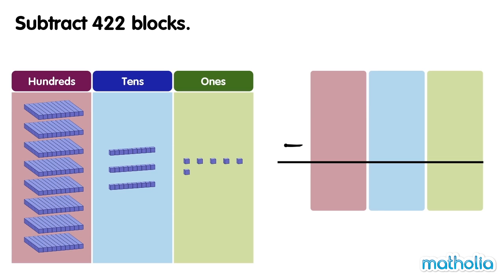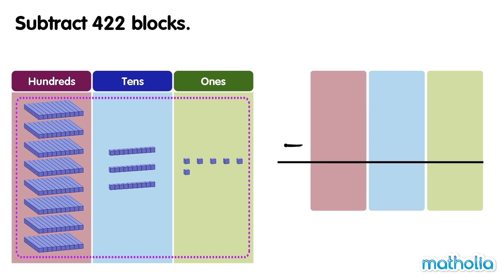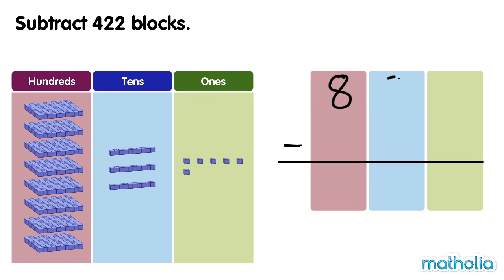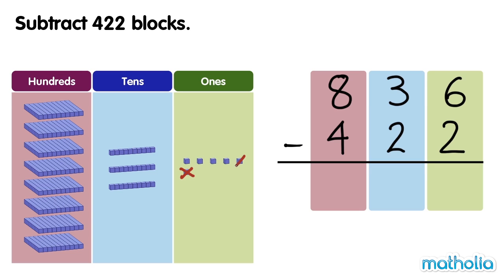Subtract 422 blocks. We have 836 blocks. We subtract 422 blocks. Let's start by subtracting the ones. 6 ones minus 2 ones equals 4 ones.